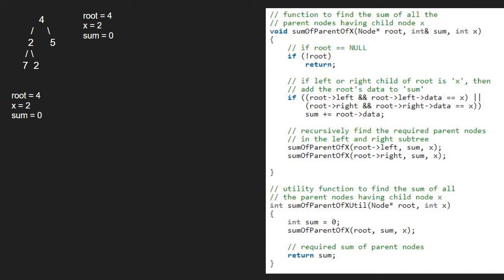Now, in the sumOfParentOfX function, we check if root is null. As it is not, we check if root's left exists and root's left data is x. As it is true, we add root's data to sum, so sum will be 4. Then we recursively find the required parent nodes in left and right subtrees.